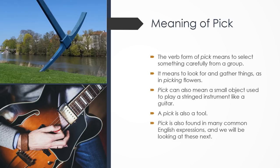The verb form of PICK means to select something carefully from a group. It means to look for and gather things, as in picking flowers. PICK can also mean a small object used to play a stringed instrument, like a guitar. A PICK is also a tool. PICK is also found in many common English expressions and we will be looking at these next.